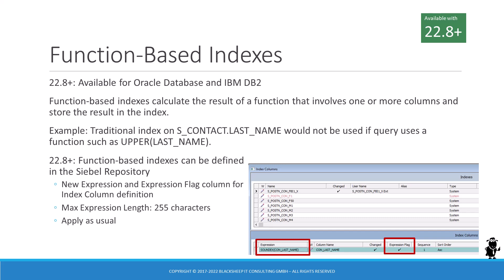But with 22.8 and higher, thanks to new columns in the repository tables, developers can define function expressions for index columns in Siebel Tools and then apply the changes as usual. The mandatory post-install database update process makes the necessary schema adjustments, after which the index column list has two new columns: expression flag and expression.